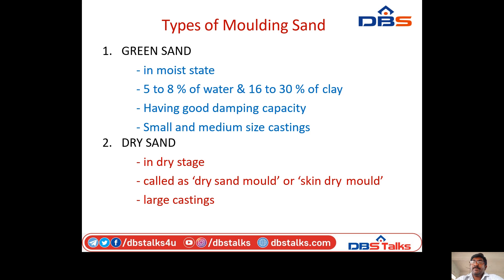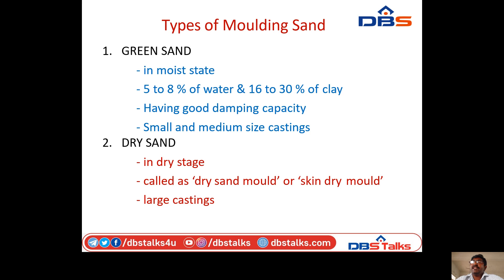Types of moulding sand: first, green sand. It is the most common mould material — a mixture of silica sand, clay, and water. Silica sand is the major portion, with water content of 5–8% and clay of 16–30%. It has good damping capacity. Green sand is used for small and medium size castings.